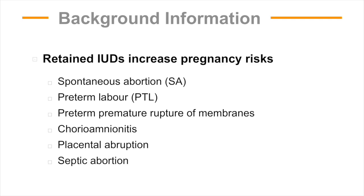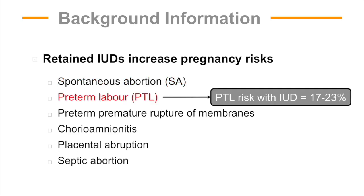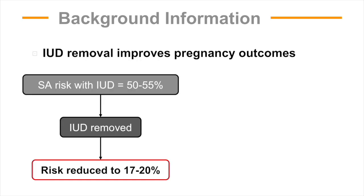Pregnancies complicated by a retained IUD are at increased risk of adverse outcomes, most commonly spontaneous abortion and preterm labour. Removing a retained IUD in pregnancy can improve pregnancy outcomes.